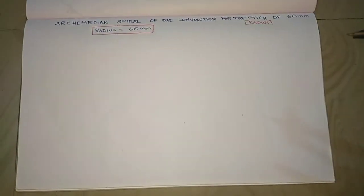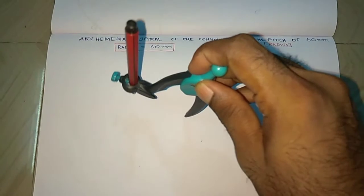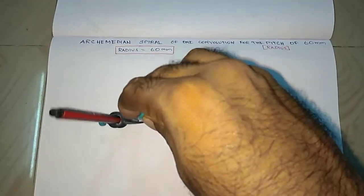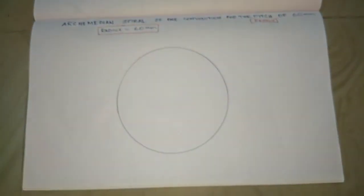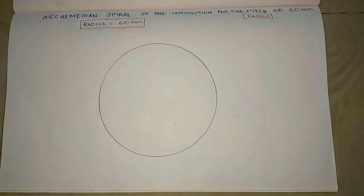Today we are going to learn how to draw an Archimedean spiral of one convolution for the pitch of 60mm. Pitch and radius are the same. So measure the value of 60mm as a radius, then draw the circle.